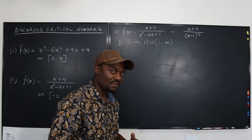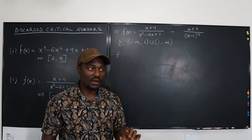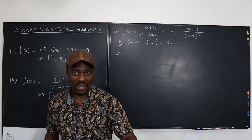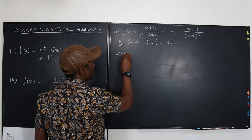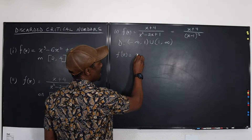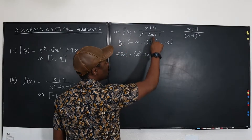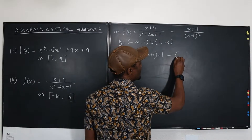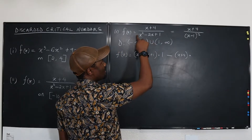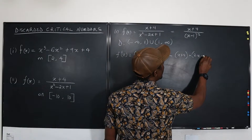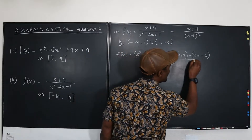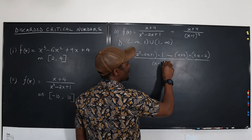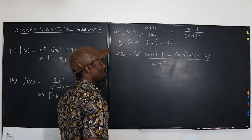Now let's find the critical numbers. For a rational function, the critical numbers come from setting the numerator of the derivative equal to zero or the denominator equal to zero. Applying the quotient rule: f prime of x equals x squared minus 2x plus 1 times one, minus x plus four times 2x minus 2, all over x minus one squared squared, which gives x minus one to the fourth in the denominator.